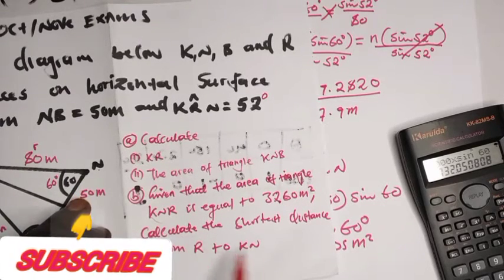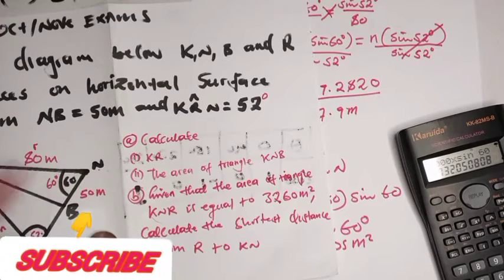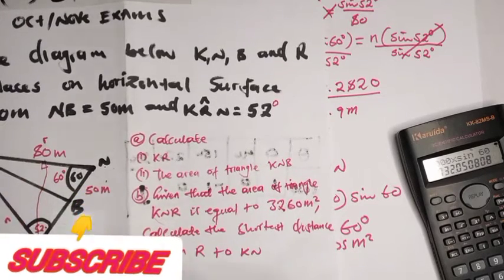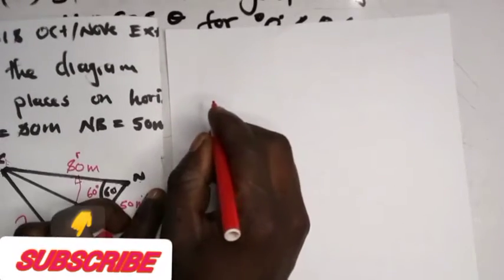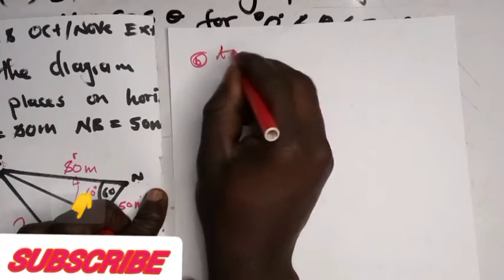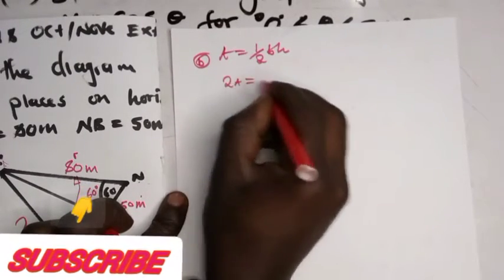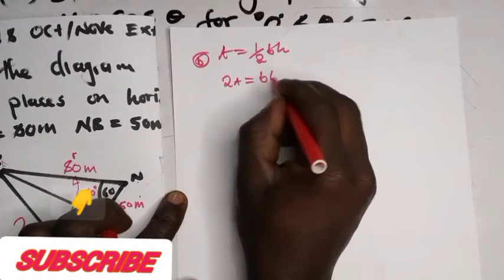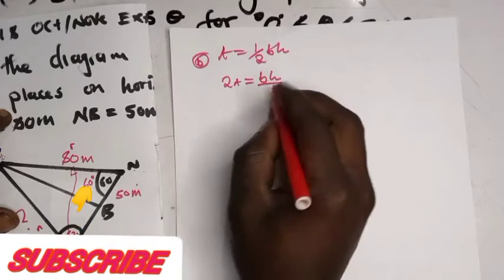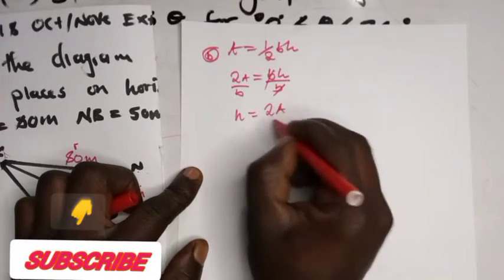We are asked to calculate the shortest distance from R to KN. We have to find the perpendicular distance from R to KN, which is the shorter distance they are asking for. For the shortest distance we normally use the area of a triangle formula: area equals half times base times height. Rearranging, 2A equals base times height, so height equals base times height divided by base.